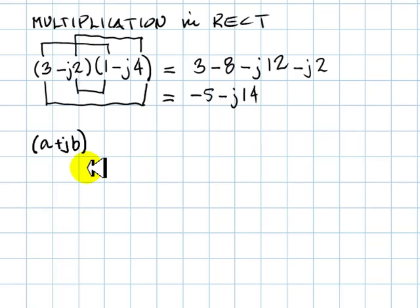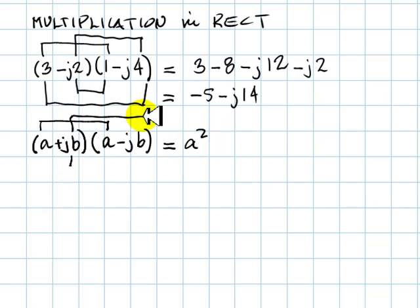This way of multiplying is particularly useful when we're using symbols instead of numbers. Let's say we multiply a plus jb with its complex conjugate a negative jb. And we want to know the results. The real part would be a squared times negative, times negative 1, that is positive b squared.